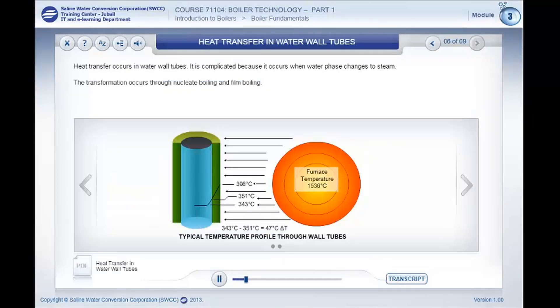Heat transfer occurs in water wall tubes. It is complicated because it occurs when water phase changes to steam. The transformation occurs through nucleate boiling and film boiling.